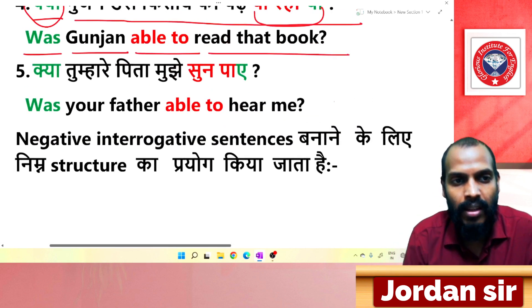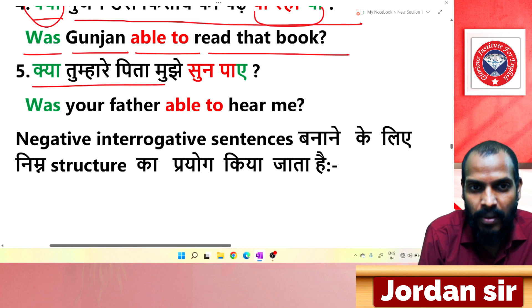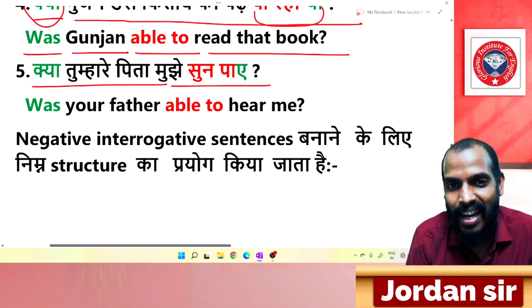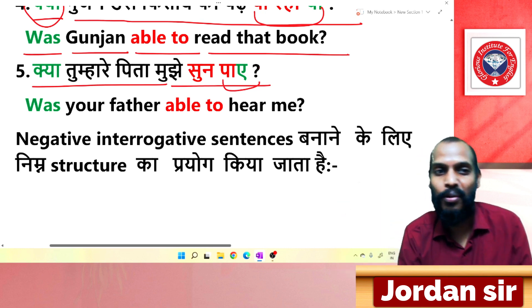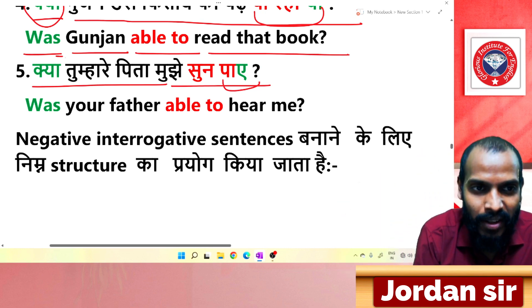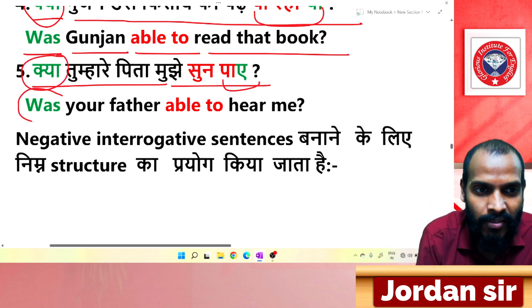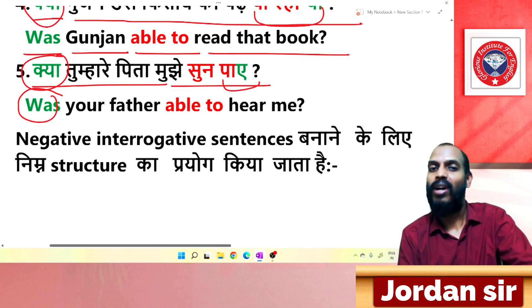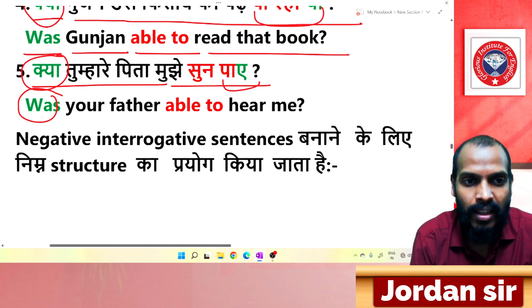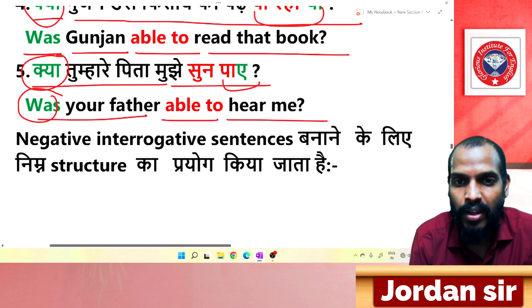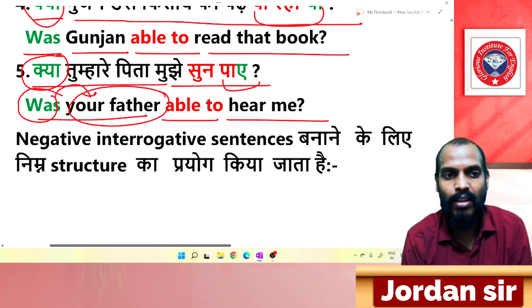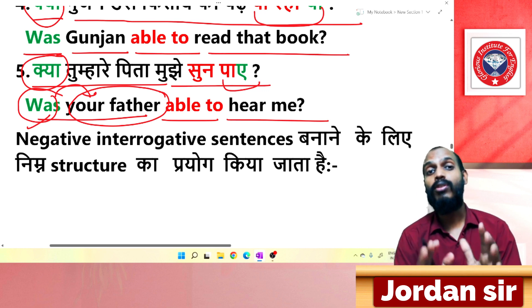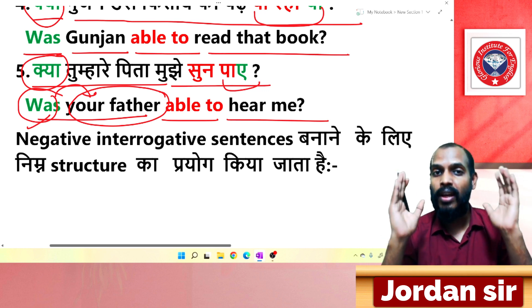Next: 'क्या तुम्हारे पिता मुझे सुन पाए?' The ending 'पाए' and interrogative form tell us to put 'was/were' before the subject. 'Your father' is singular, so 'was' is used. Translation: 'Was your father able to hear me?' Was your father able to hear me?